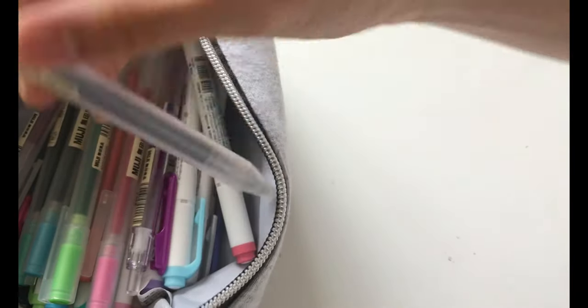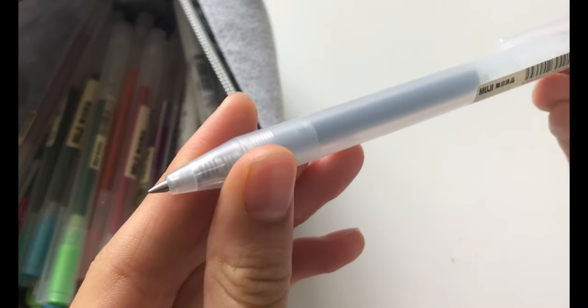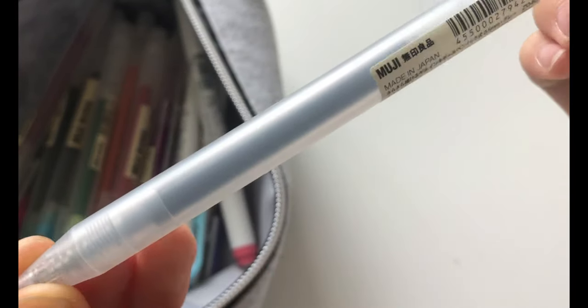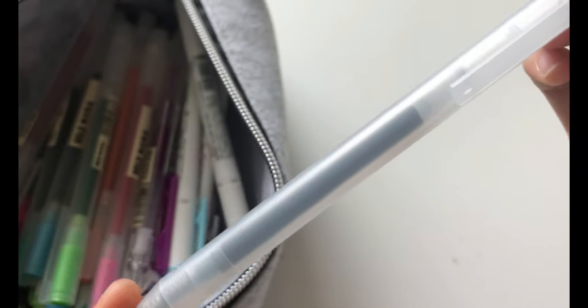The next item is the 0.5 gel ink pen by Muji. So this is in the colour grey and I use this all the time for dates and things like that in my notes.